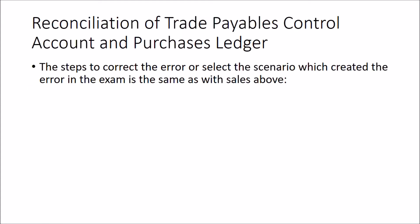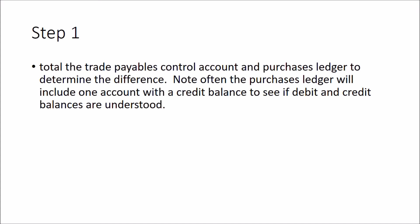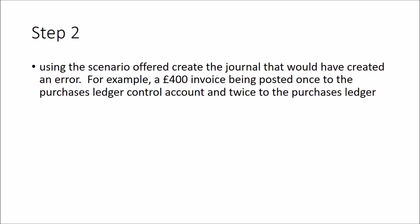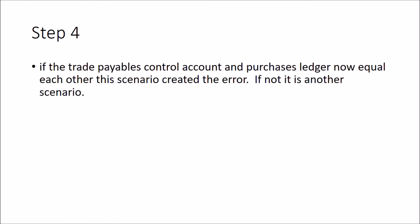Reconciliation of the trade payables control account to the purchase ledger follows exactly the same four steps. Step one: total the trade payables control account - which may also be called the purchase ledger control account - and the purchase ledger, and determine the difference. Note the purchase ledger may include an account with a debit balance, such as a prepayment. Step two: create the journals from the scenarios. Step three: reverse them. Step four: check whether the trade payables control account now reconciles to the purchase ledger. If it does, that's the correct scenario.